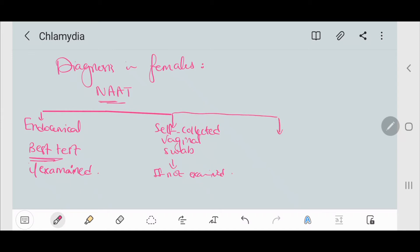The third way is a first-pass urine. It is only done if endocervical swab or self-collected vaginal swab cannot be taken, like for example after hysterectomy. And it is not as sensitive as self-collected vaginal swabs.